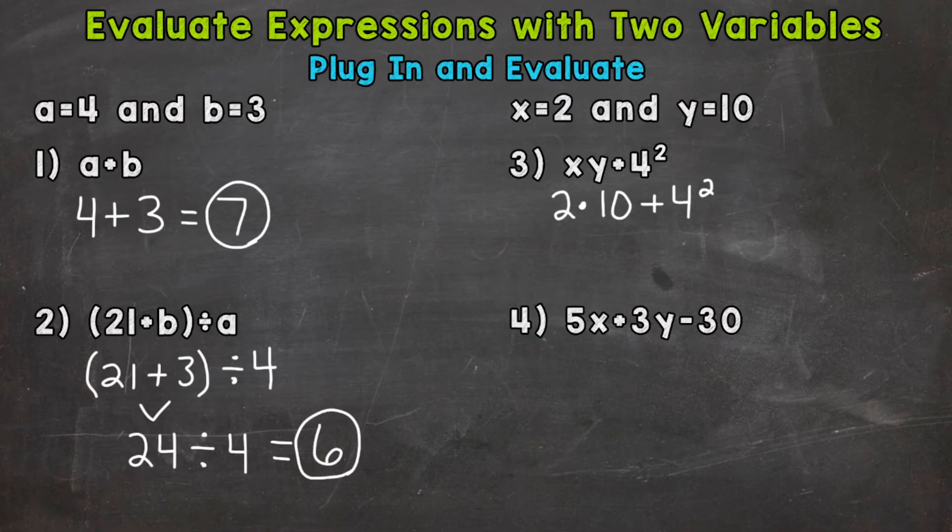4 squared, or 4 to the second power. That does not mean 4 times 2. It means 4 times 4. So that gives us 16. Bring down everything we did not use, and we'll go from there.